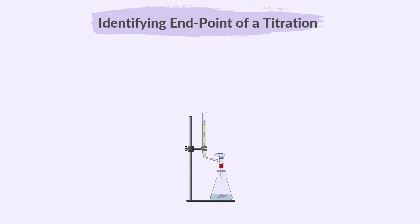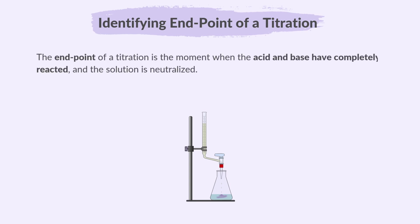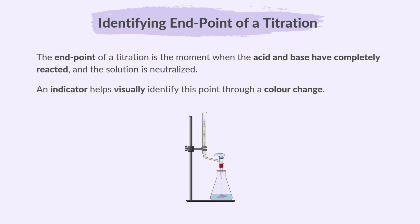So how do we identify the end point of a titration using an indicator? The end point of a titration is the moment when the acid and base have completely reacted and the solution is neutralized. An indicator helps visually identify this point through a color change.